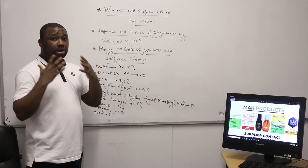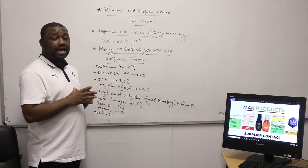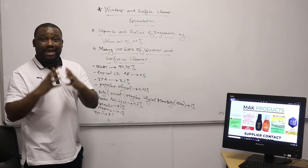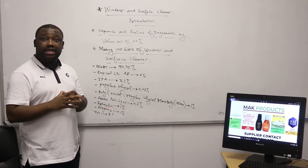Please note that while manufacturing this product, you need to adjust the pH to about 11 to 12 to obtain a quality product. This product performs very well when it has a pH of around 11 to 12. Now let us consider manufacturing 100 liters of window and surface cleaner.